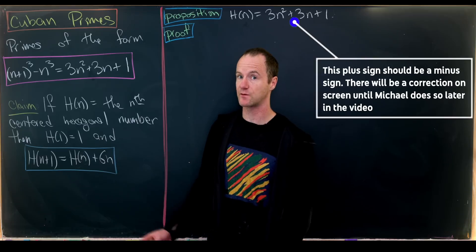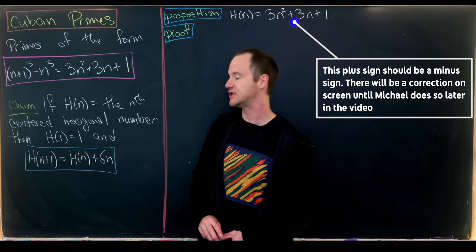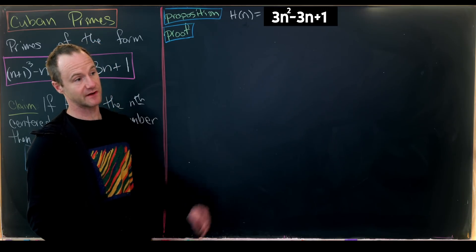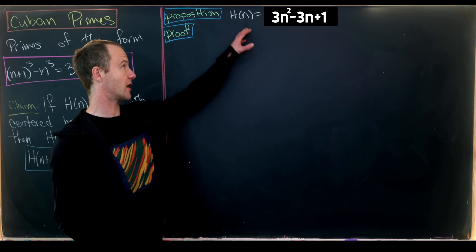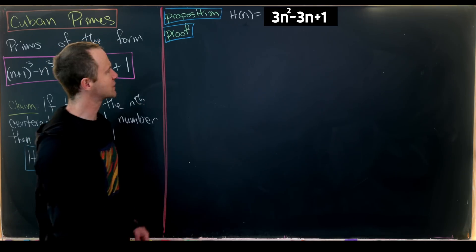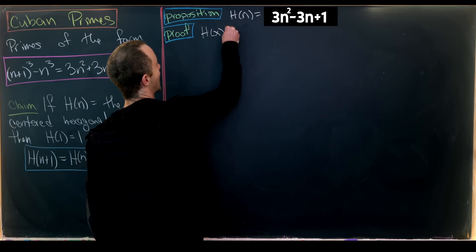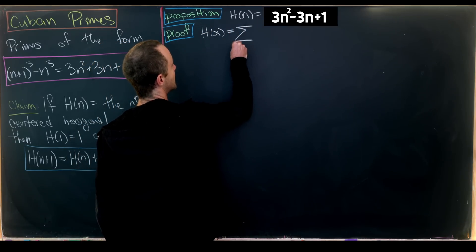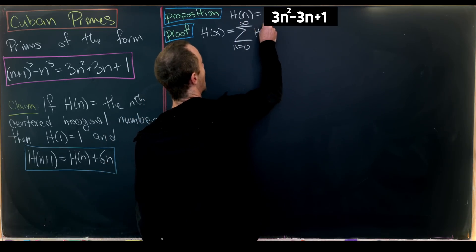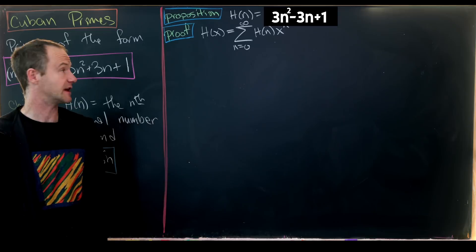We've motivated the recursion h(n+1) = h(n) + 6n for centered hexagonal numbers. Now we'll use this with generating functions to derive the closed form 3n² + 3n + 1. Let's define H(x) = Σ(n=0 to ∞) h(n)x^n, the generating function.